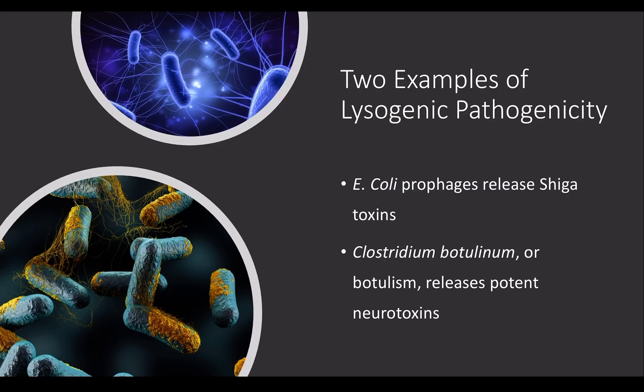Two examples of where lysogenic conversion has contributed to pathogenicity include E. coli and Clostridium botulinum. In E. coli, the prophage results in the release of Shiga toxins, which are released directly from E. coli. The Shiga toxins are some of the most potent biological toxins known and cause cell damage and death. In the case of Clostridium botulinum, or more simply known as botulism, a neurotoxin is produced that causes acute paralysis and attacks the nervous system. This can lead to difficulty breathing, muscle paralysis, and even death. In both of these cases, it was lysogenic conversion that played a role in the pathogenicity of the bacteria.